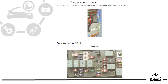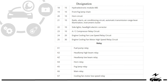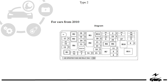Engine compartment fuse box location. Type 1: diagram. Type 2: diagram, assignment.